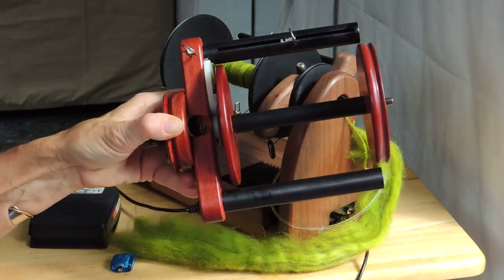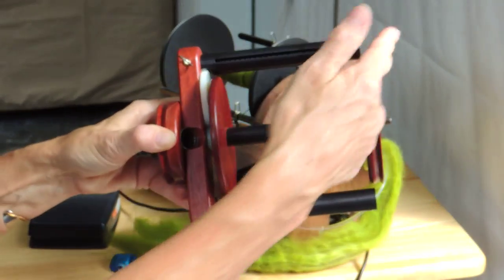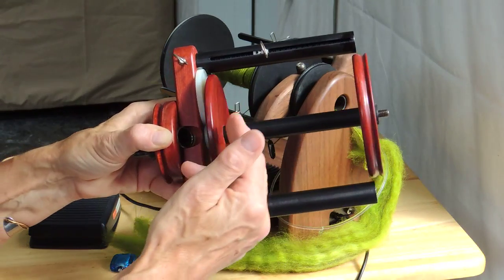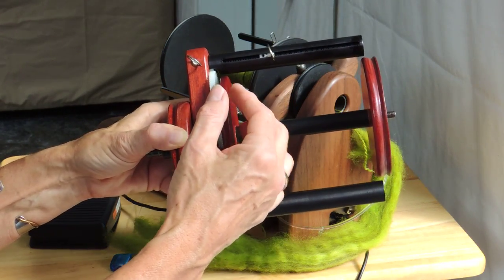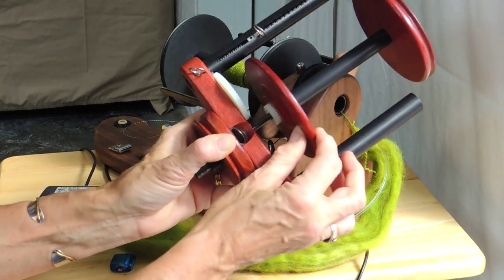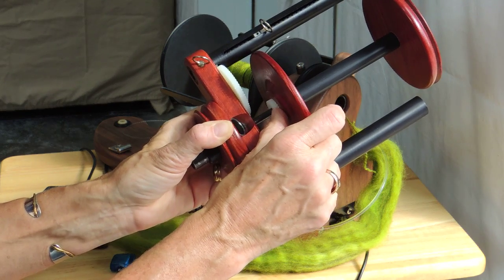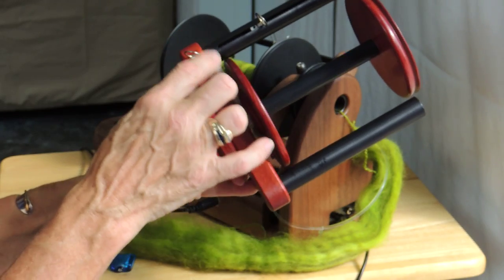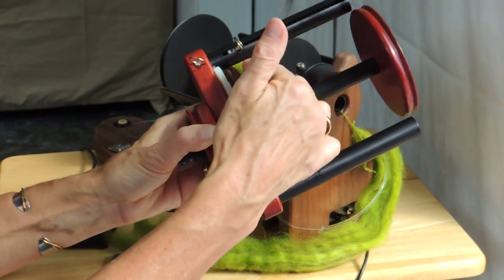As the bobbin moves along the eye moves back and forth automatically to lay down your thread in a very even manner and the reason that happens is because the bobbin itself has a gear that meshes with this gear and that's how the mechanism works.